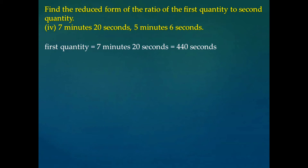Similarly, for the second quantity, we have 5 minutes and 6 seconds. So 5 minutes converted into seconds will be 300 seconds, and plus 6, that is 306 seconds.